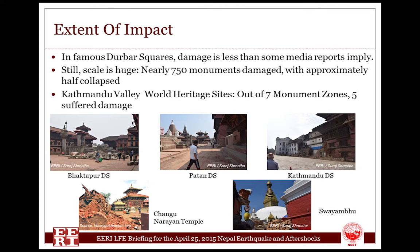Among them, Kathmandu Darbar Square suffered greatly. Patan and Bhaktapur Darbar Square were partially damaged. Swoembu Monument Zone also suffered heavy damage, though the main shrine wasn't damaged. Changunarayan Temple was also partially damaged. However, there are several iconic temples and monuments that have survived in all these world heritage sites — that's the interesting point.